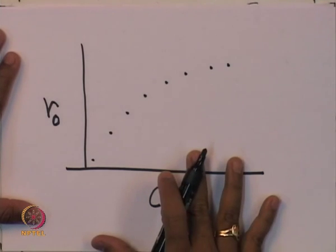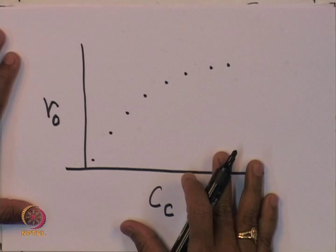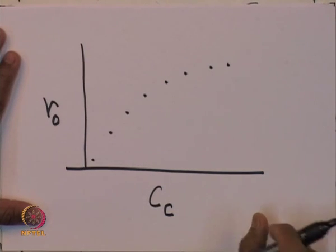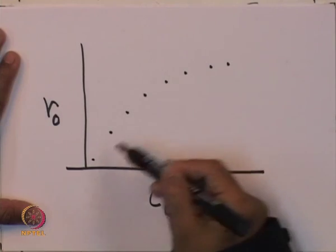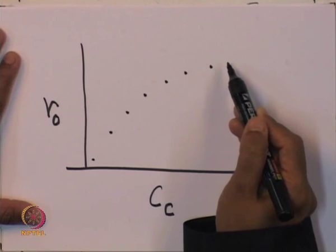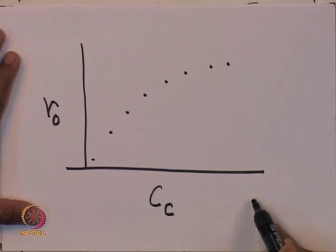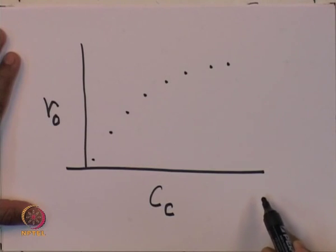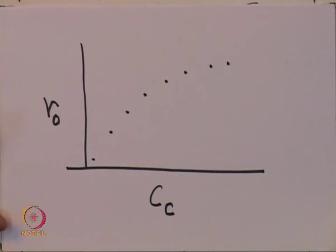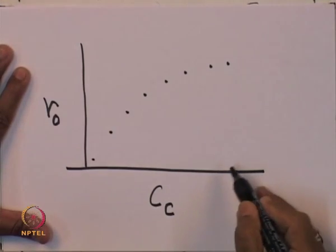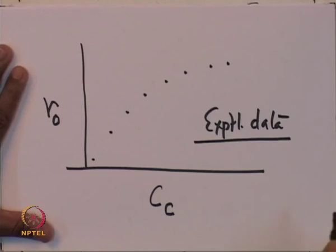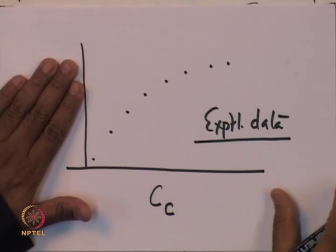The experimental data of C_C vs. observed rate shows that initially the rate increases roughly linearly with cyclohexane concentration, then the slope decreases, and at sufficiently high C_C the rate becomes nearly constant — approaching saturation.